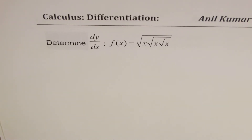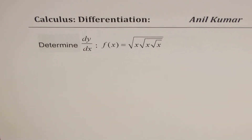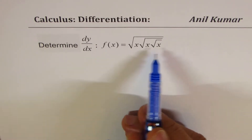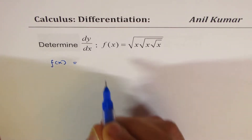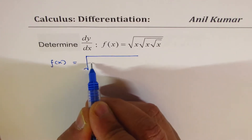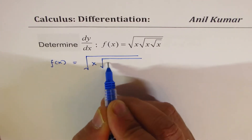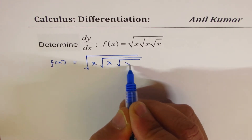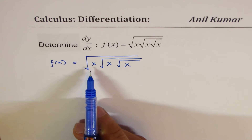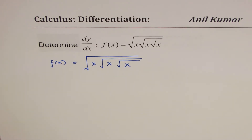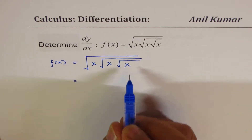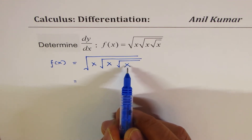When the x's are being multiplied within the square root, let's see how to find the derivative of such a function. We are given f(x) = √(x · √(x · √x)). Since all of them are multiplying, we can apply the power rules and simplify. The concept here is to simplify the expression using the power rule of exponents.